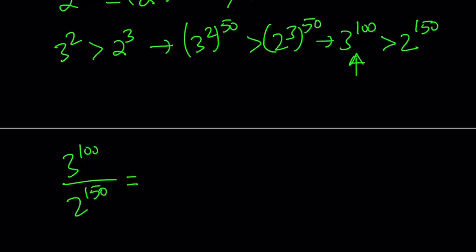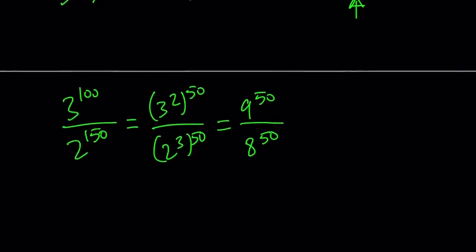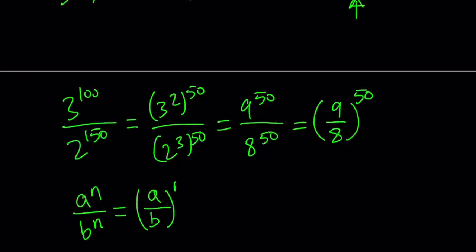We can write this as 3 to the second to the power 50 over 2 to the third to the power 50. This allows us to write it as basically 9 to the power 50 divided by 8 to the power 50. Since these two numbers have the same exponent, we can express them with a common exponent. Writing it like 9 over 8 as a fraction to the power 50. Here we used a property of exponents: a to the power n divided by b to the power n can be written as the nth power of a over b.